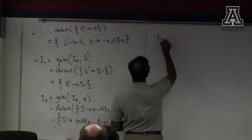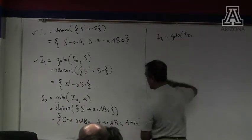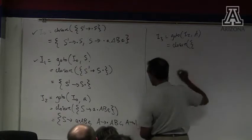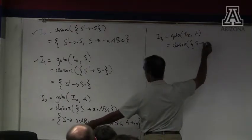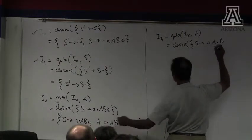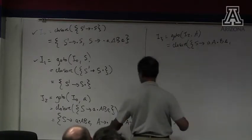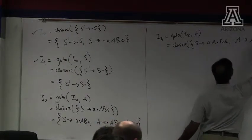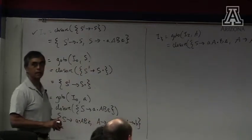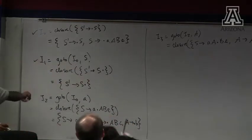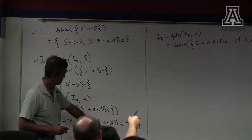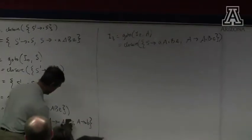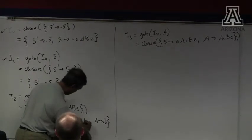Go-to from I2 on big A is equal to the closure of walking the dot across: B, E, and big A, so this item gets picked up as well. A goes to A dot B, C. And here's a non-terminal to the right of the dot — so all of its productions get added in, with the dot all the way on the left. That's the closure.